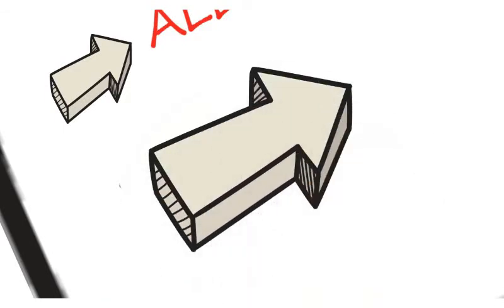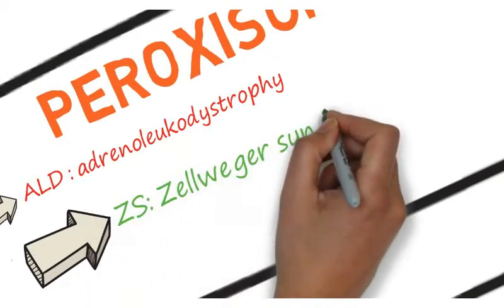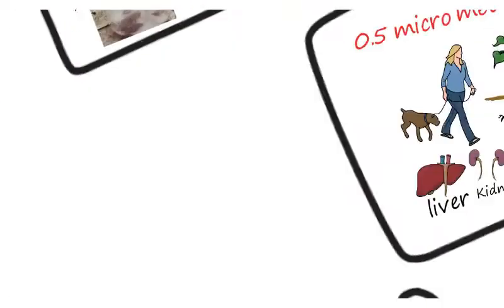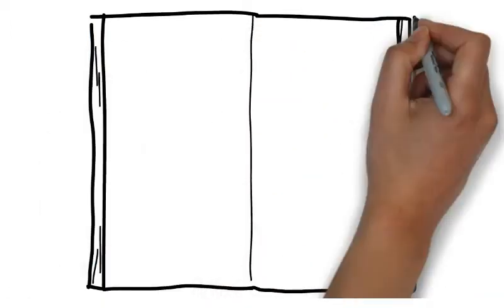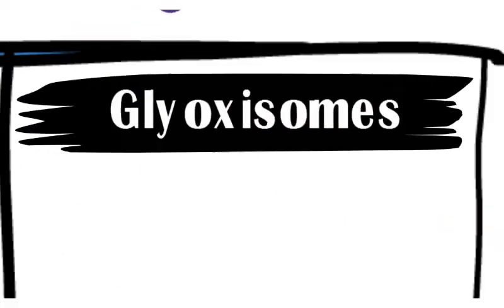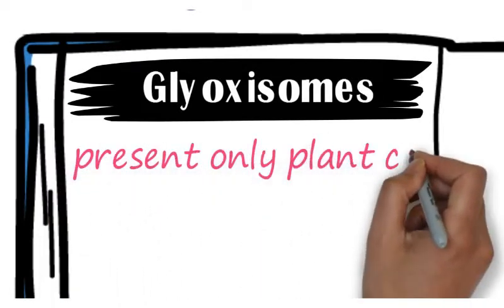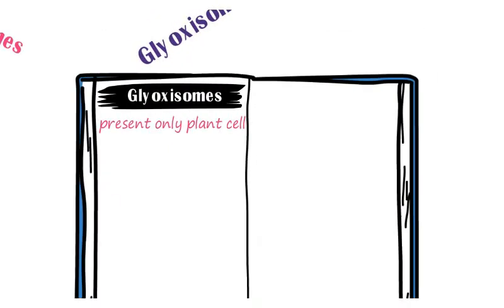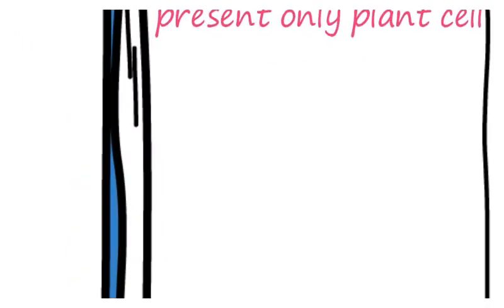Now, the second microbody is the glyoxysome. Glyoxysomes are present only in plant seeds. They are 6 micrometers in diameter.